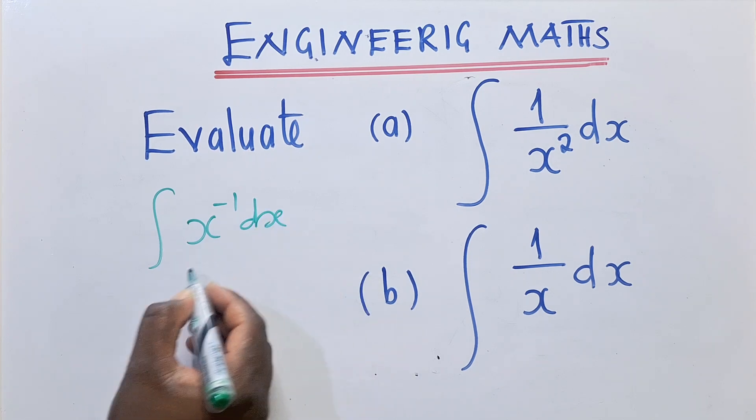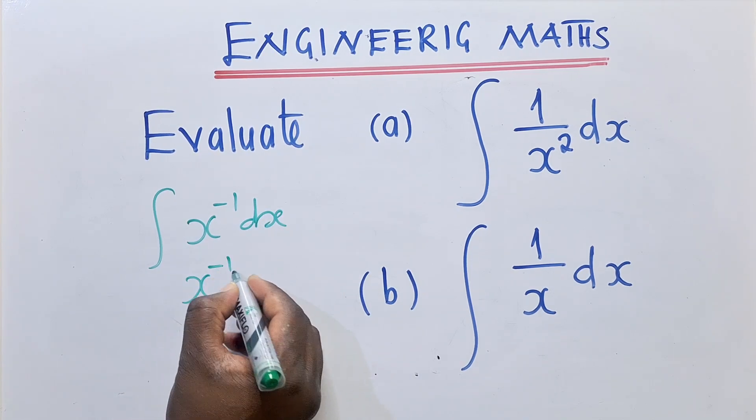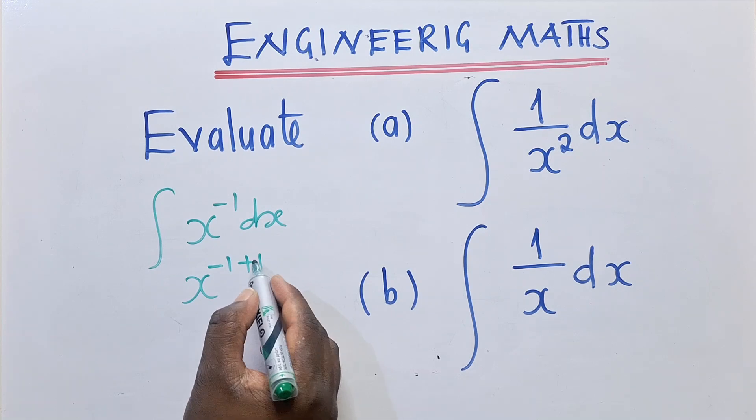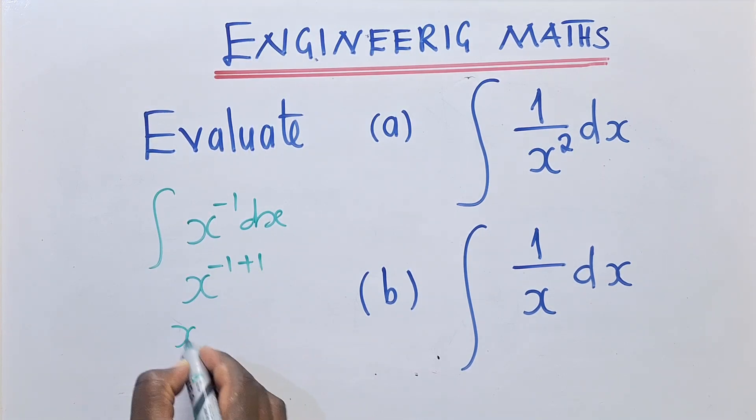So integrating this, of course we're going to add negative 1 plus 1 here, which will give us 0 right here on top. So it will be x power 0. And if we bring this 0 here, this is not allowed in mathematics.